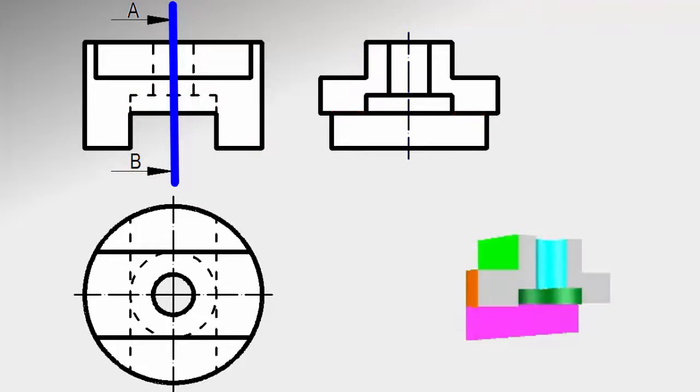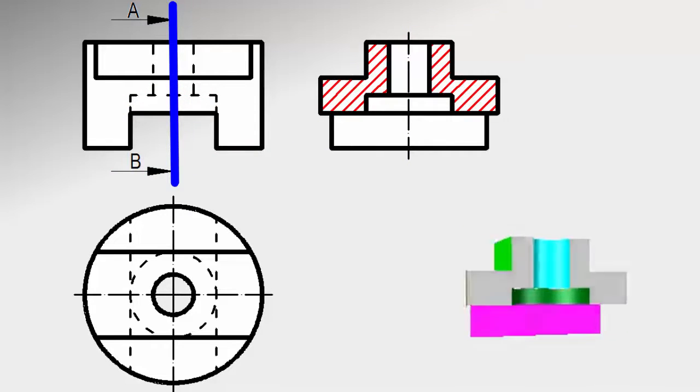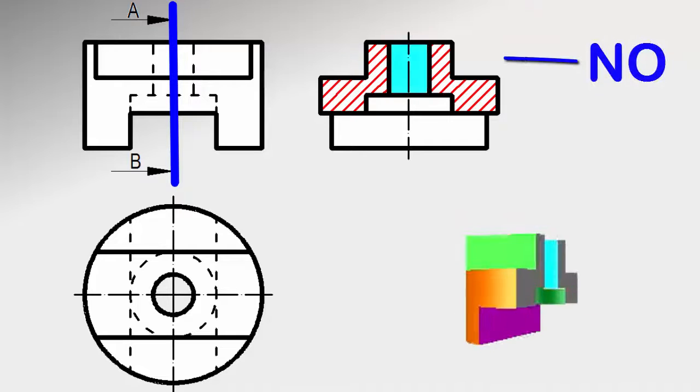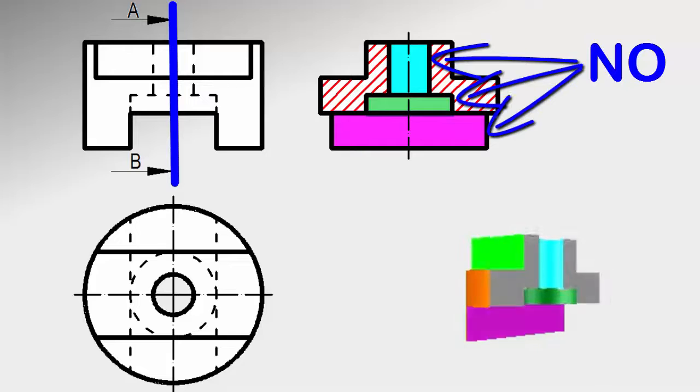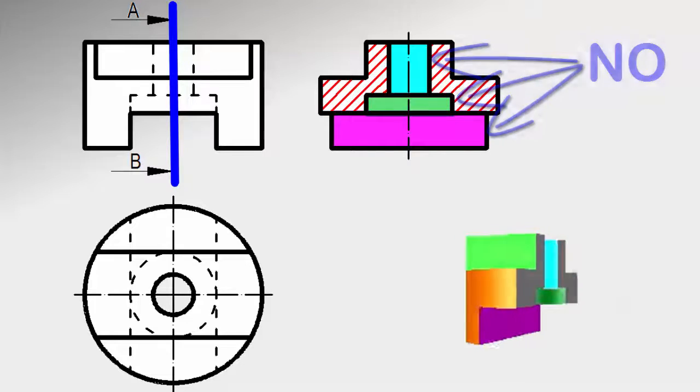We add striped hatching in those parts through which the cutting plane passed. The interiors of the holes or the wall of the lower slot, for not being in contact with the cutting plane, is not hatched.